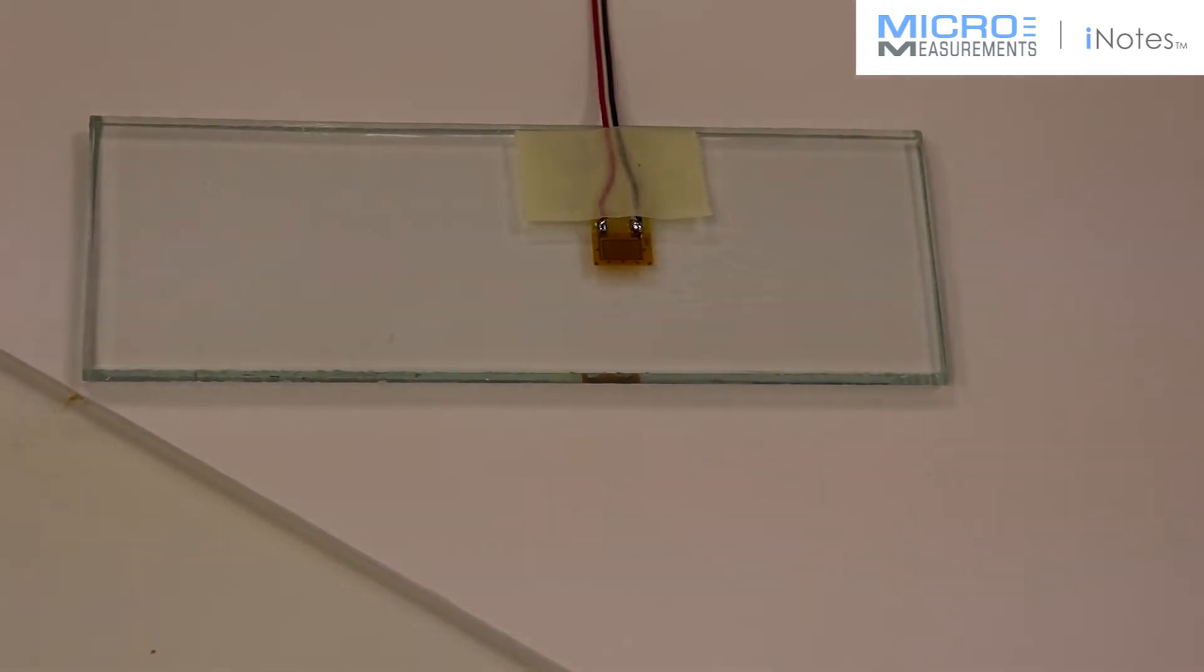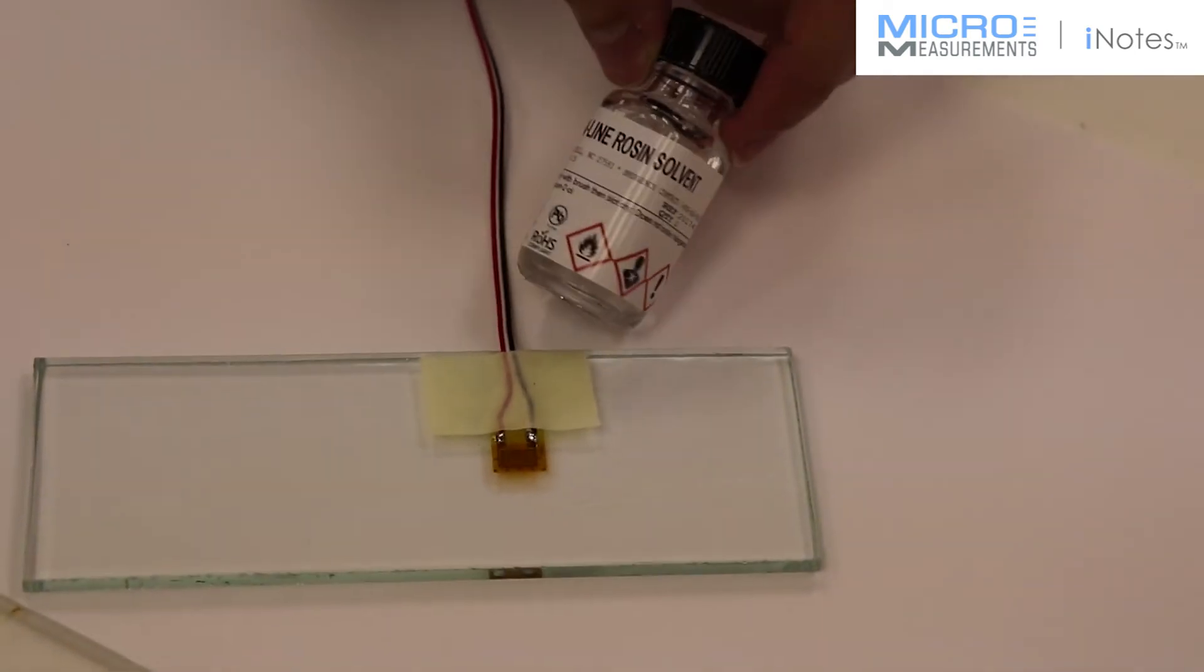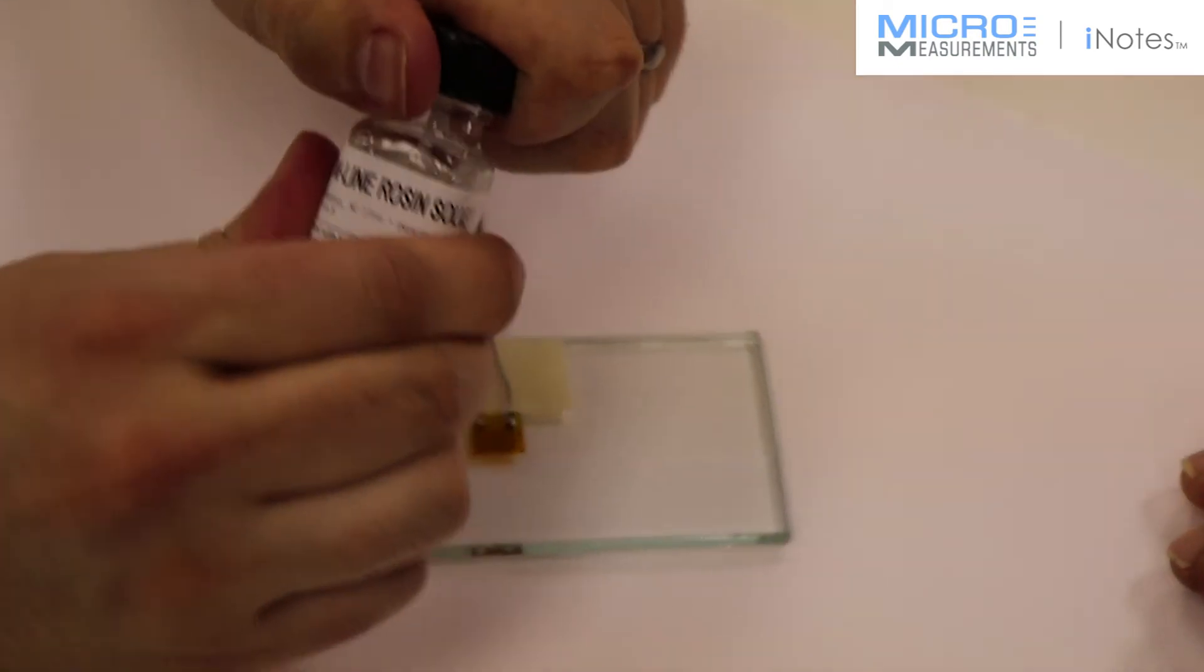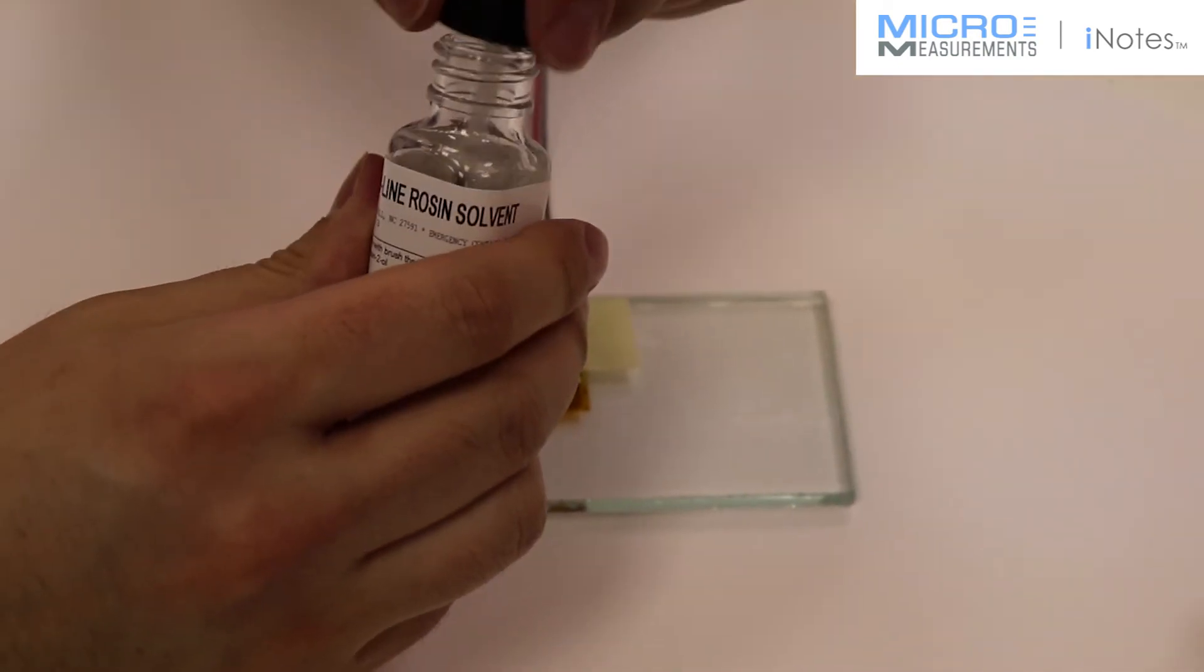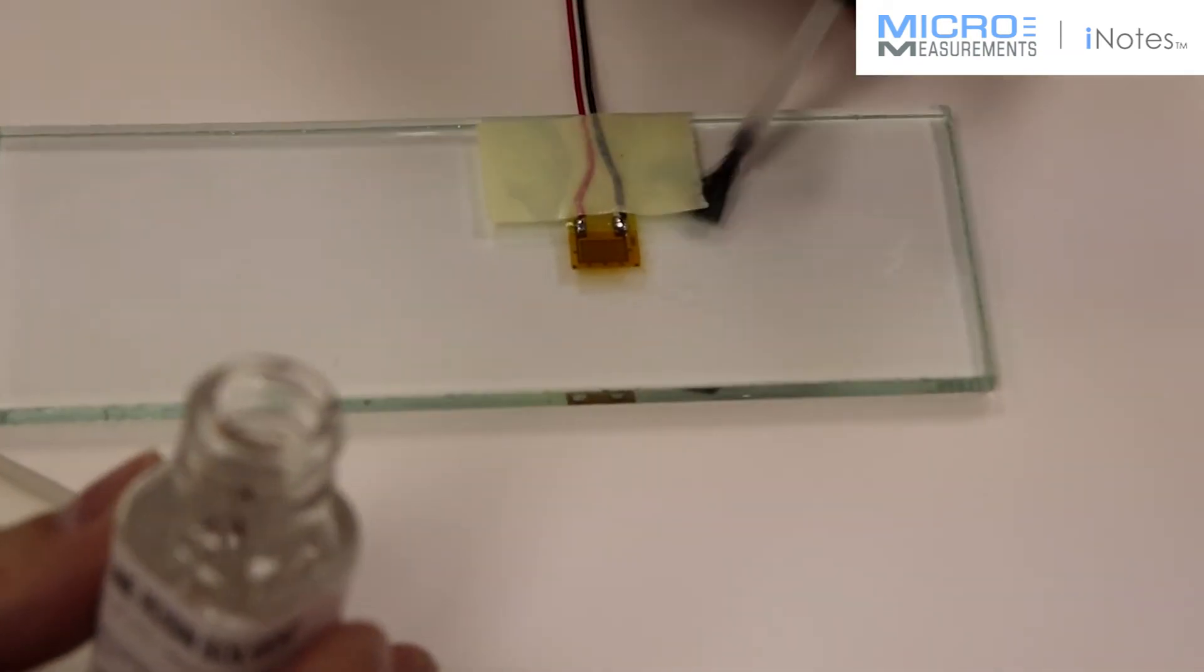Because of the poor peel strength of the adhesive on glass, we're going to use the rosin solvent to break down the mastic of the paper drafting tape so that we can remove it, and also to put the flux into suspension.